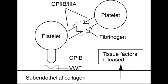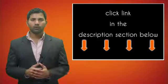Von Willebrand's disease is diagnosed with the Ristocetin cofactor assay. In terms of lab values, there is no change to the platelet count, as there is no direct effect on platelet count itself. There is an increase in bleeding time due to the defect in platelet to von Willebrand factor adhesion. Prothrombin time is unchanged since the extrinsic pathway is unaffected, but partial thromboplastin time can be normal to increased due to the effect on factor VIII.